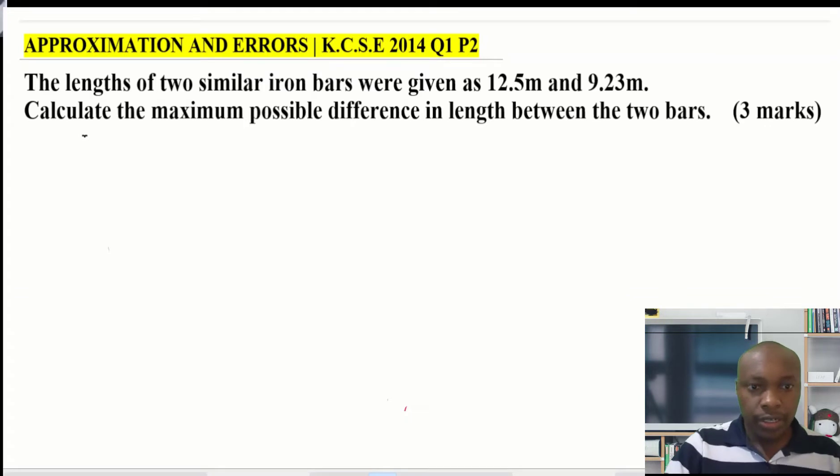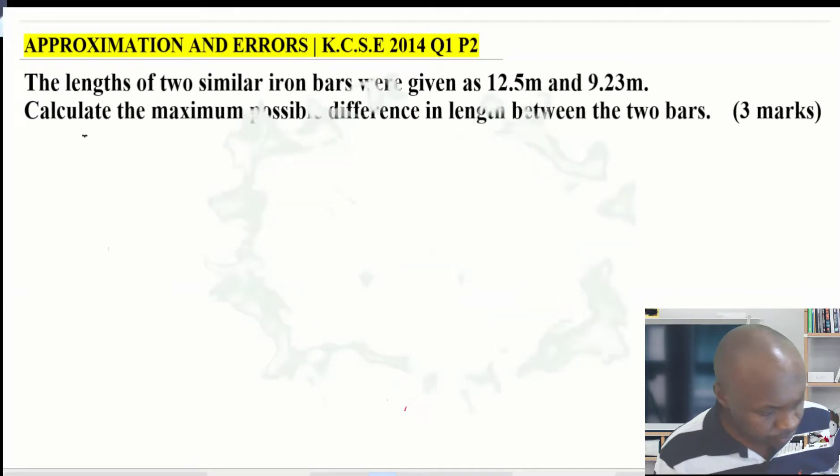Approximation and errors, KCSE 2014 Question 1 Paper 2. The lengths of two similar iron bars are given as 12.5 meters and 9.23 meters. Calculate the maximum possible difference in length between the two bars. The question is asking for the maximum possible difference.